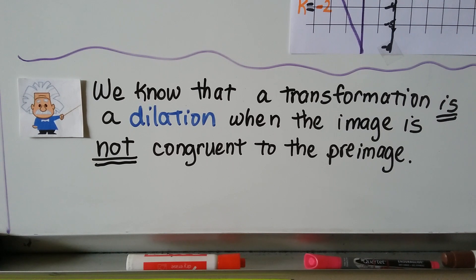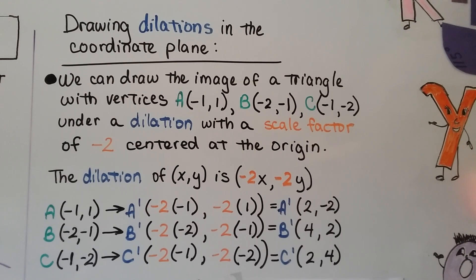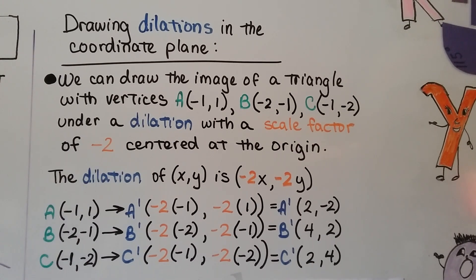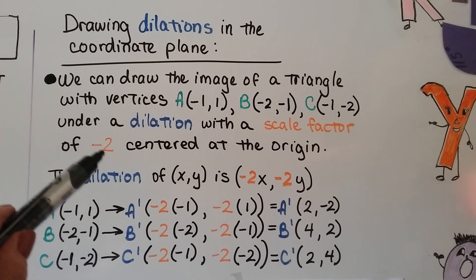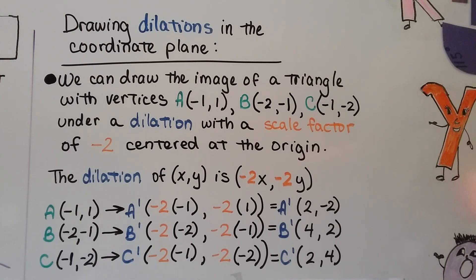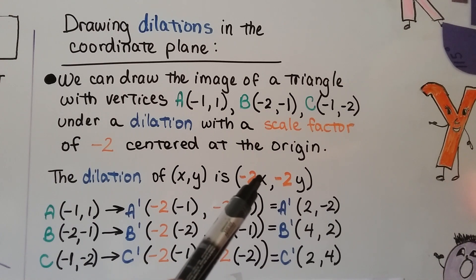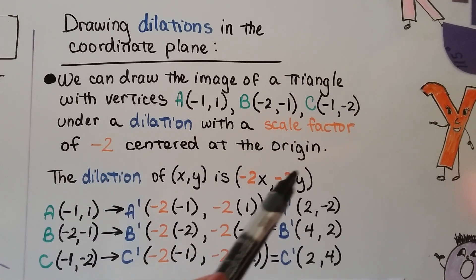For identifying dilations, a transformation is a dilation when the image is not congruent to the pre-image — it'll be bigger or smaller. For dilations in the coordinate plane, we can draw the image of a triangle with vertices A at (−1, 1), B at (−2, −1), and C at (−1, −2) under a dilation with scale factor negative 2 centered at the origin. The scale factor is negative, so we know we'll have a 180-degree rotation, and the dilation rule is (x, y) → (−2x, −2y).